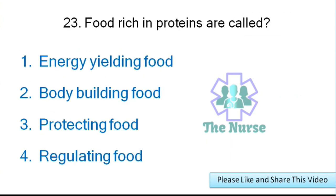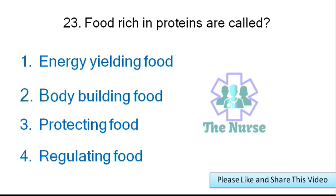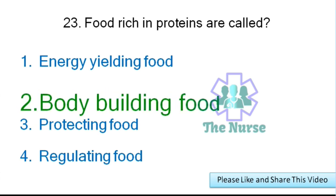Next question: Foods rich in proteins are called what type of food? Options: energy-yielding food, body-building food, protecting food, or regulating food. Correct answer: body-building food.